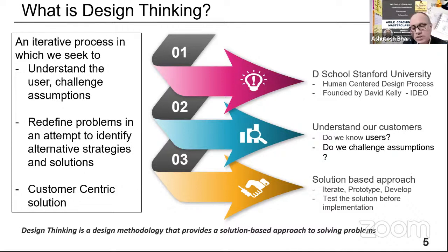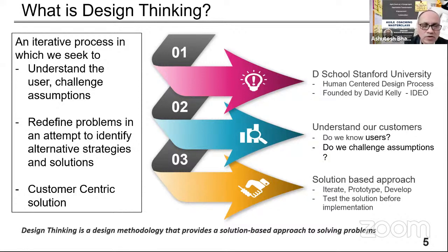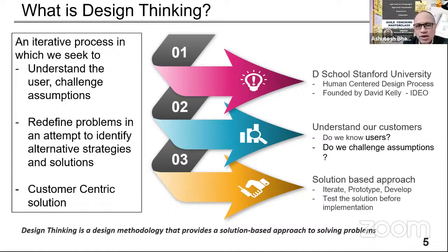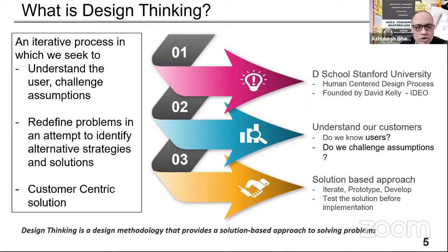Design thinking is an iterative process, not a linear one. We put the user at the centerpiece of the problem and try to come out with solutions around the problems users are facing. The core philosophy is: the user has a problem, we empathize with that user, and we come out with a solution that will rectify or at least reduce the pain point. It's a well-structured process from planning through prototype development and testing.